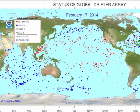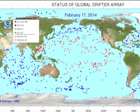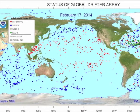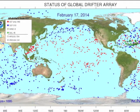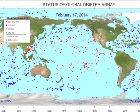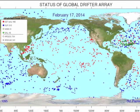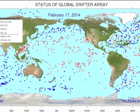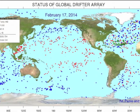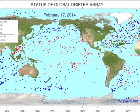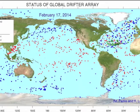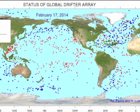Here we have a map of the current drifter array, which notes the current location of every drifter in the ocean. Drifters marked blue represent drifters with barometric pressure as well as sea surface temperature, whereas drifters marked in red do not have barometric pressure — they only measure sea surface temperature — and drifters marked green represent drifters with salinity sensors.